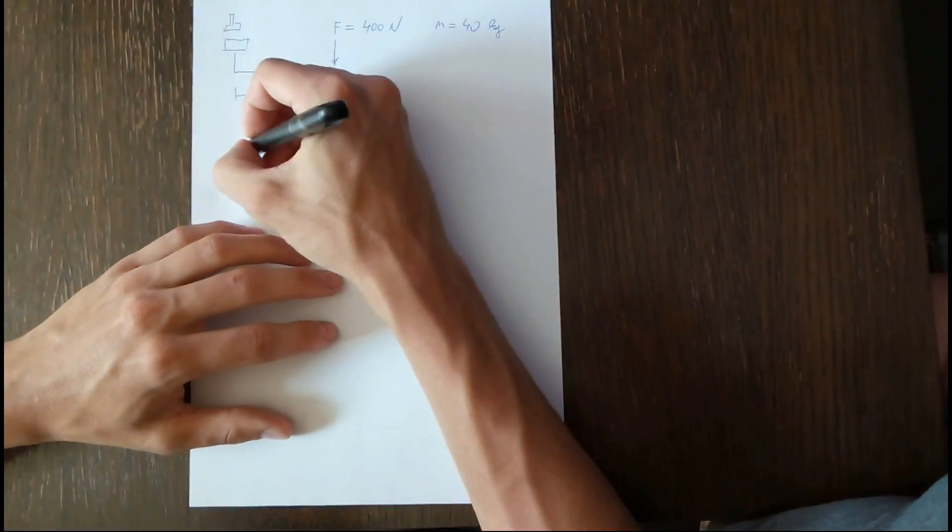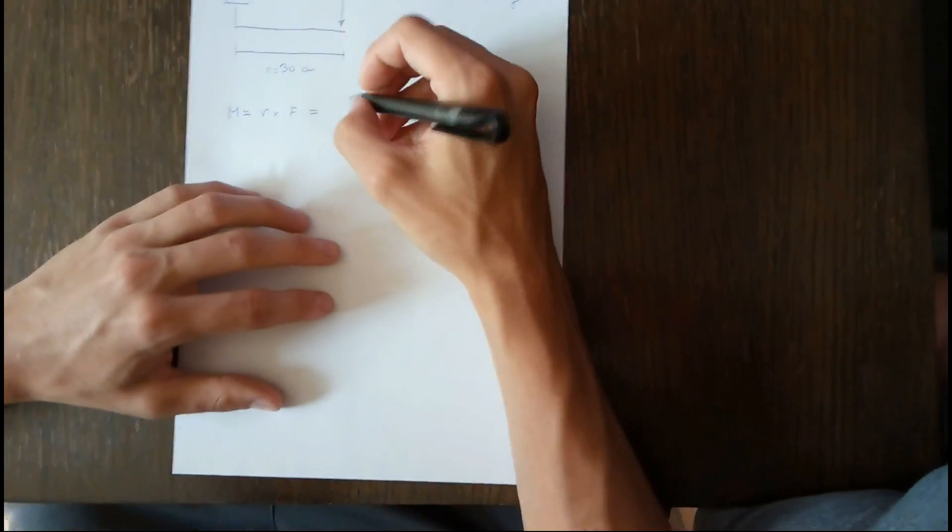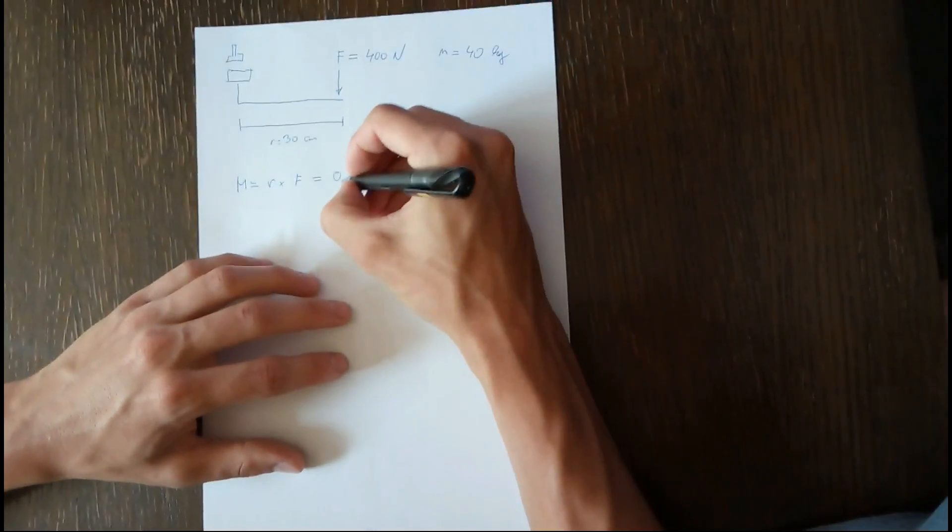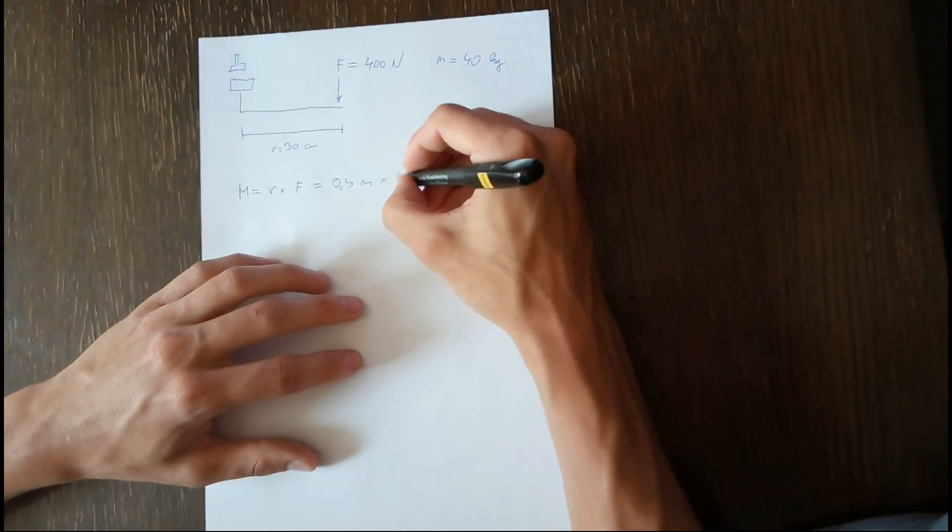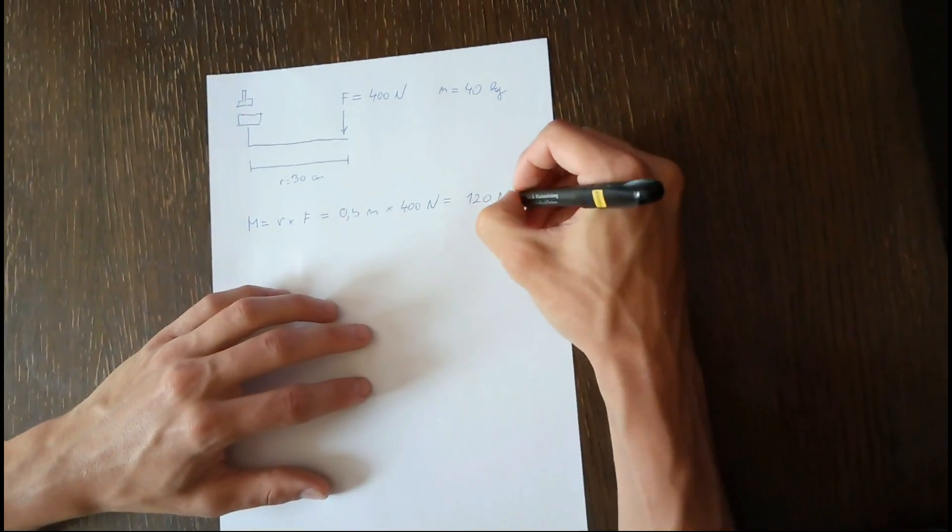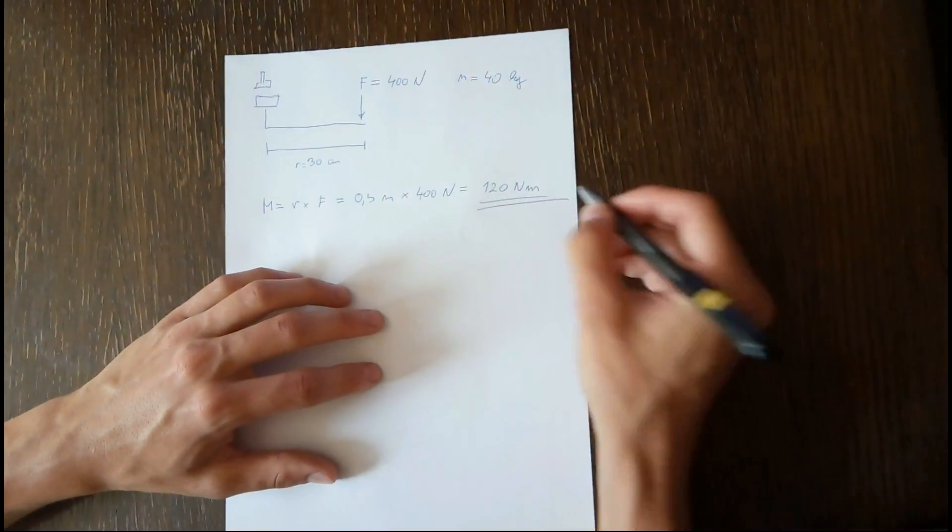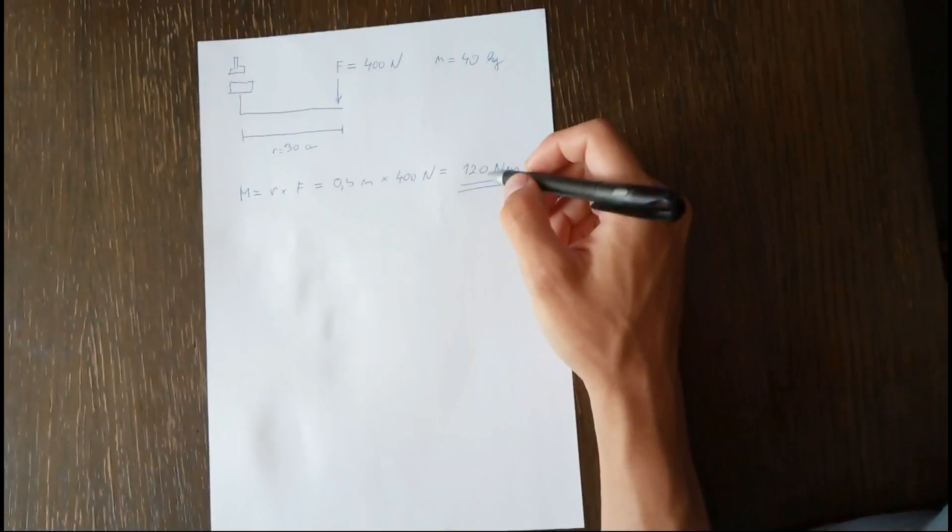Because this now at the end actually gives you exactly the specification what you want. So this is 0.3 meters times 400 Newtons is exactly 120 Newton meters. And 120 Newton meters is the value you want to torque your car bolts.